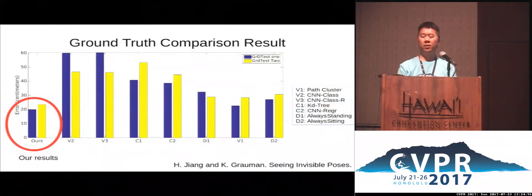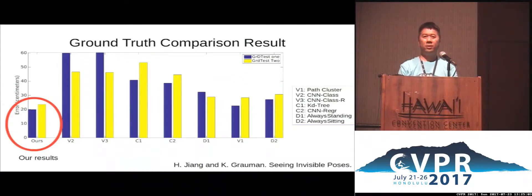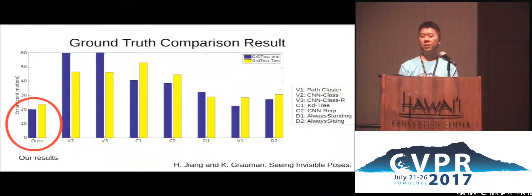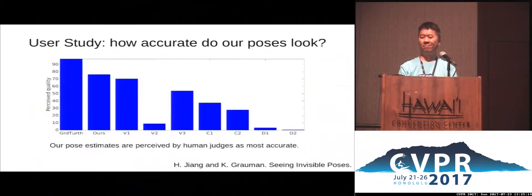Our method gives the lowest joint errors. The blue bar shows the ground truth test case where it's the same person in a different environment, and the yellow bar is a different person in a different environment. In both cases, our method gives the best results. Our method also has the highest perceived score from users in the user study.